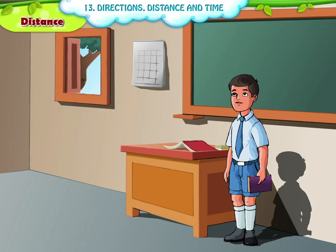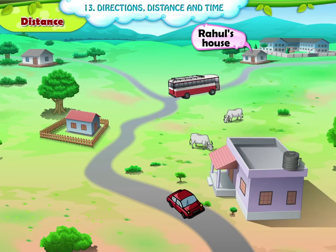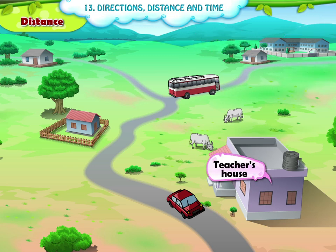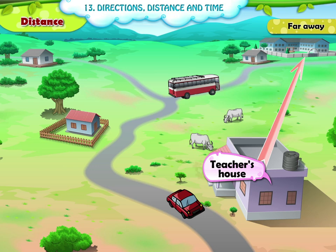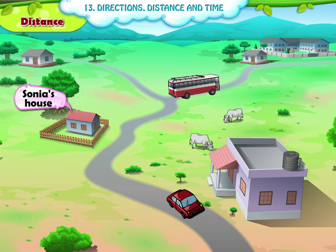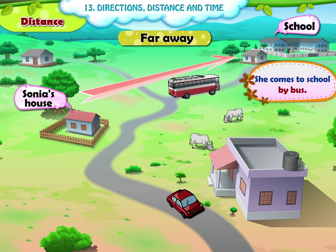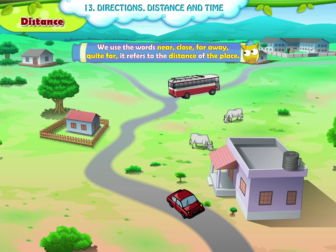Distance. Let us look at this picture. Look at this boy — his name is Rahul. Rahul's friend Sonia's house is far away from the school, so she comes to school by bus. When we use the words near, close, far away, quite far, it refers to the distance of the place.